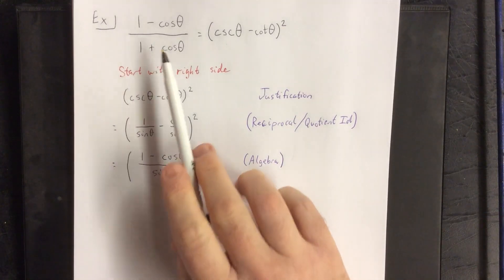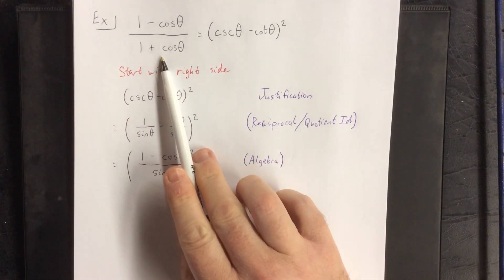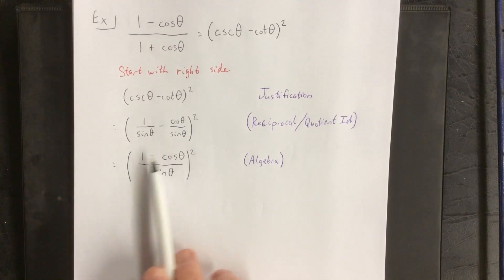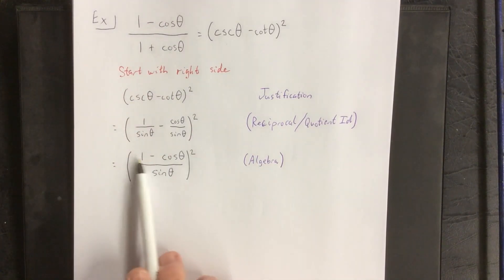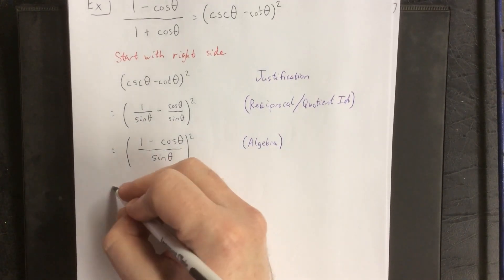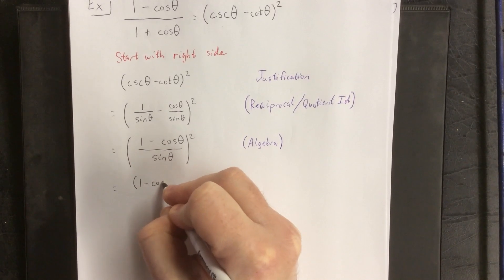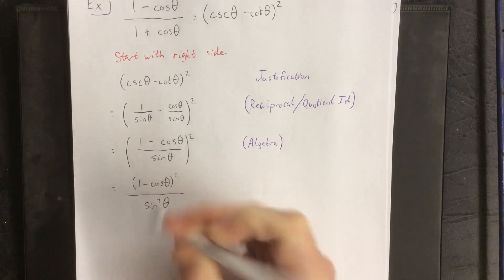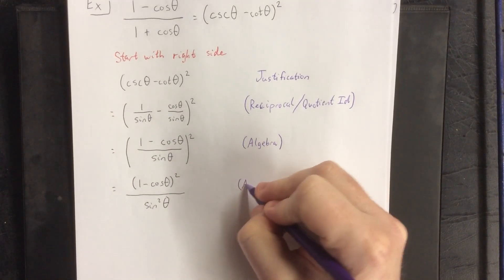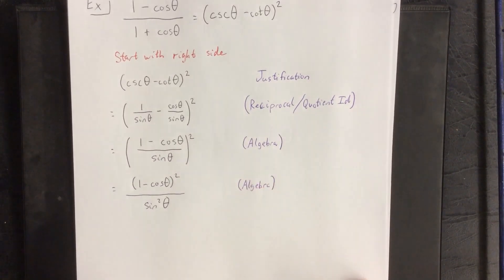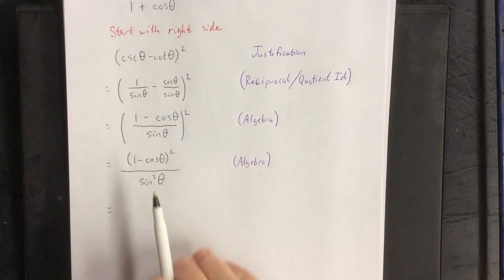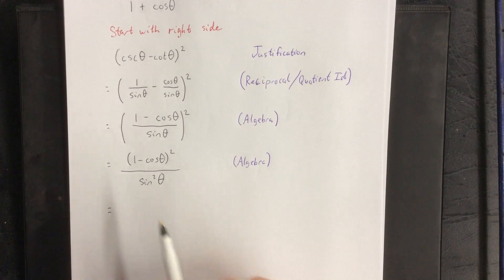Here's where I use 'eyes on the prize.' Ultimately I want this to be in terms of 1 minus cosine of theta over 1 plus cosine of theta, meaning the only trigonometric function I want present is cosine of theta. The numerator already has that — it's almost completely in the form I want. The denominator, however, is not. So I'm going to distribute the square to the top and bottom of the fraction, which is how we square a fraction — square the top and square the bottom. That's a step of algebra.